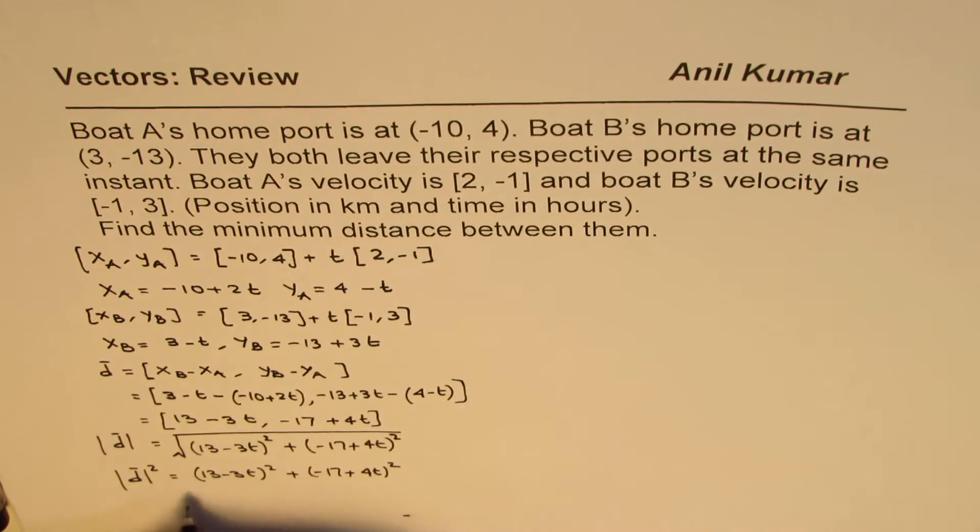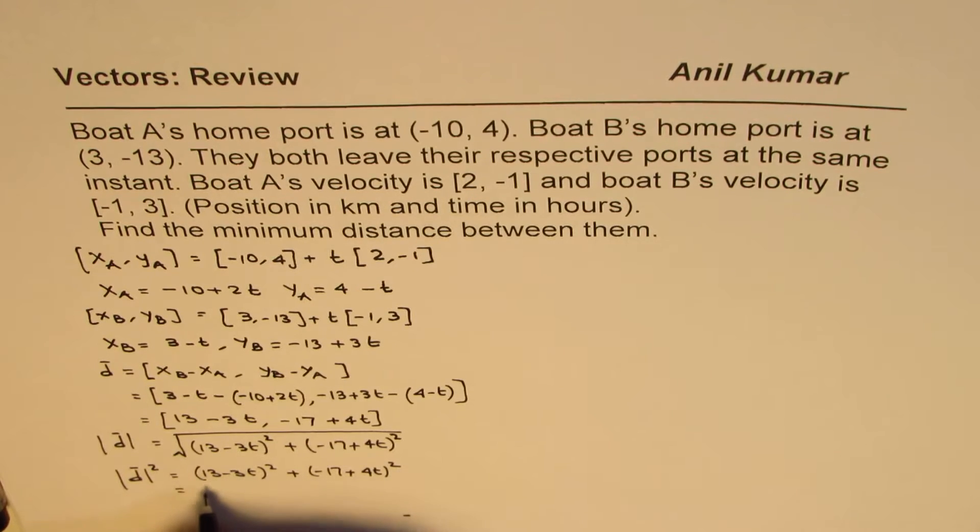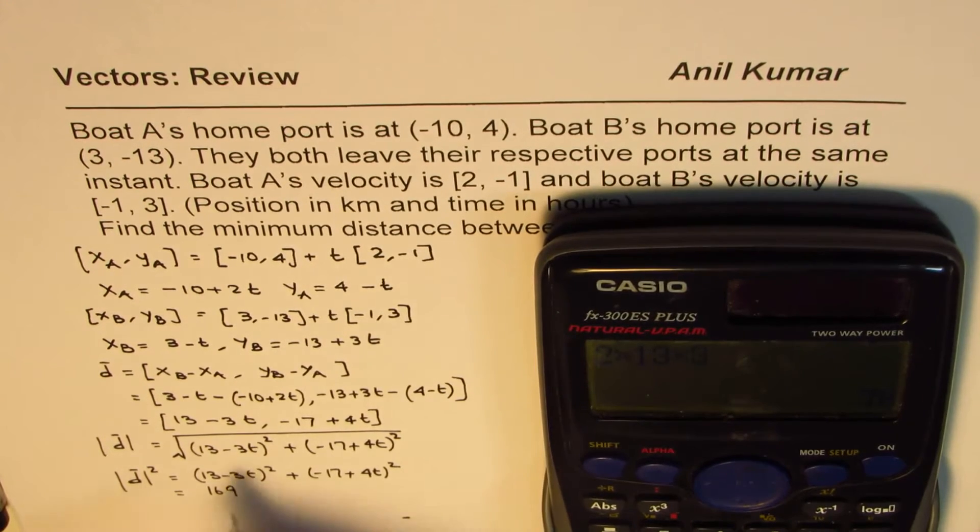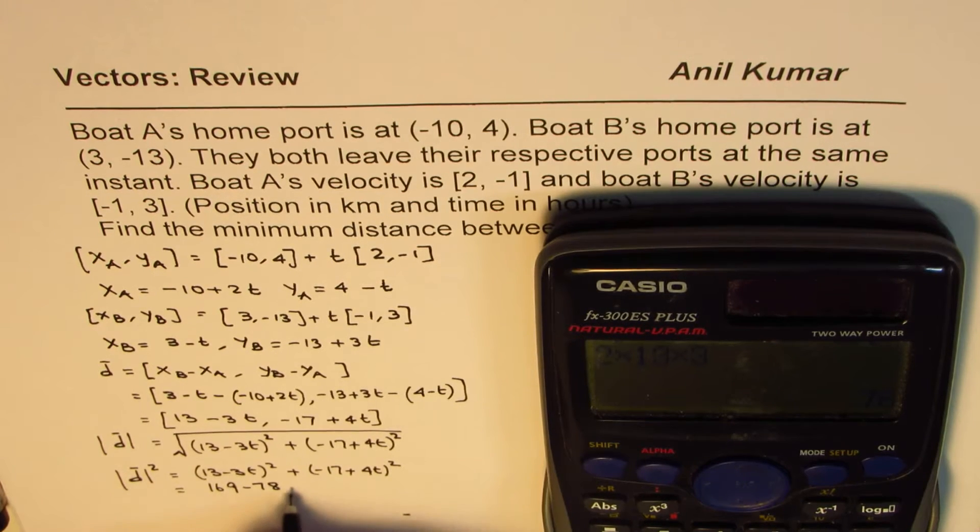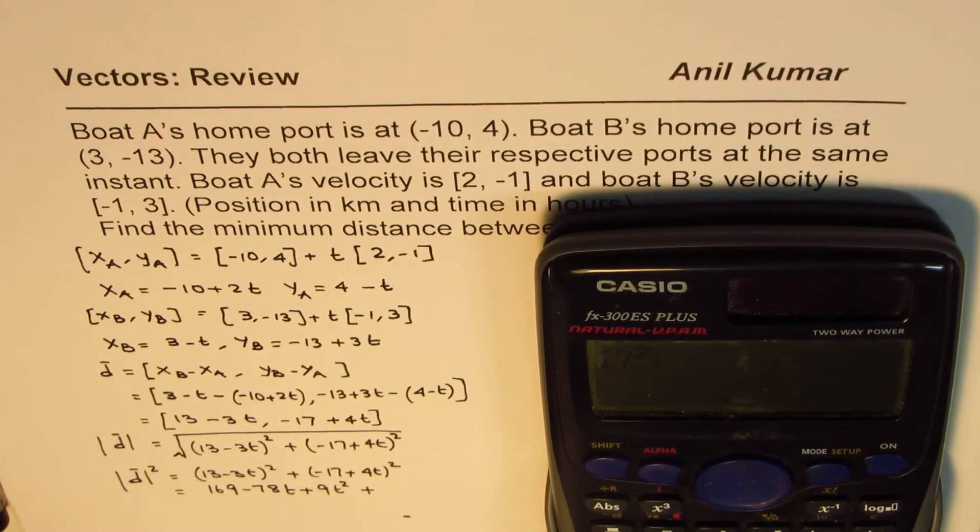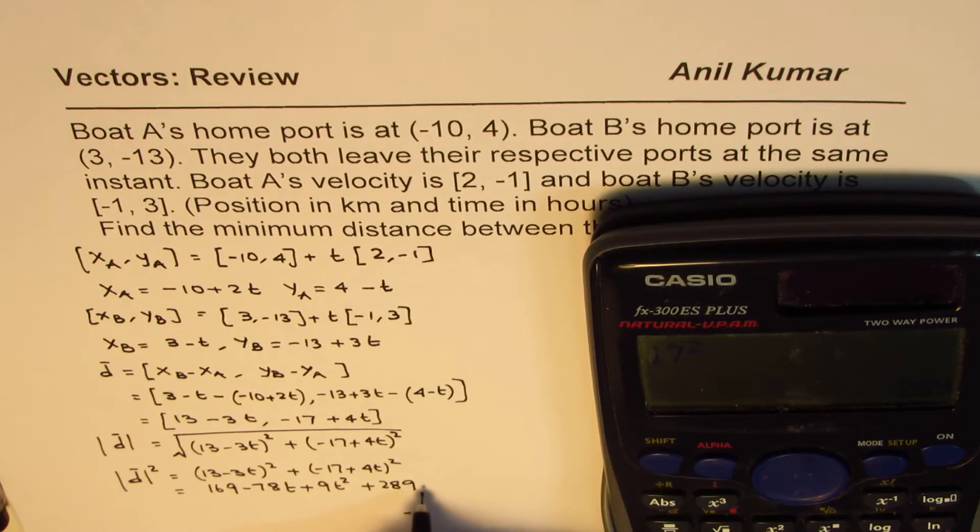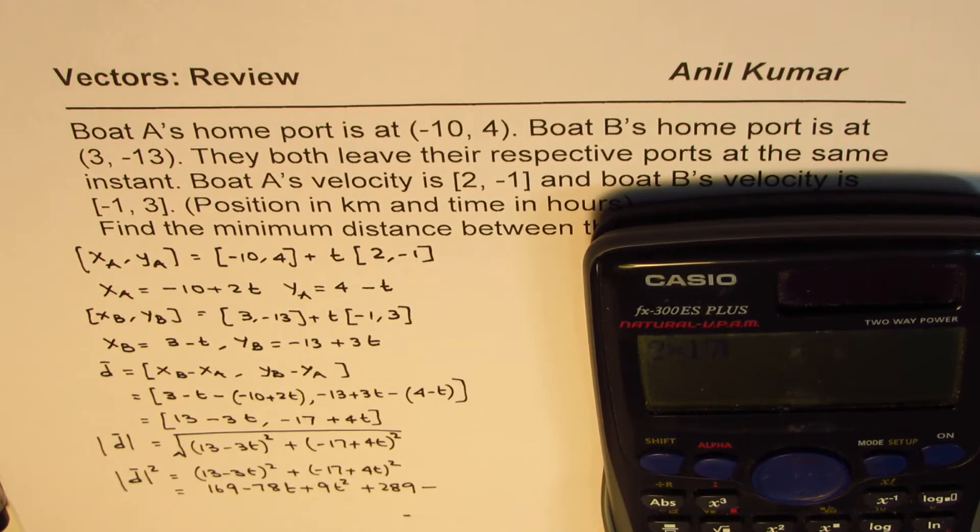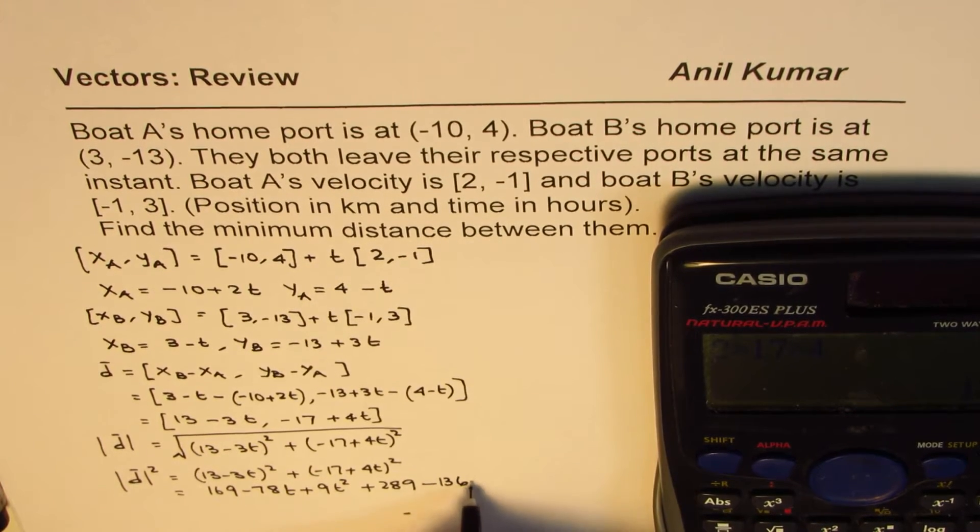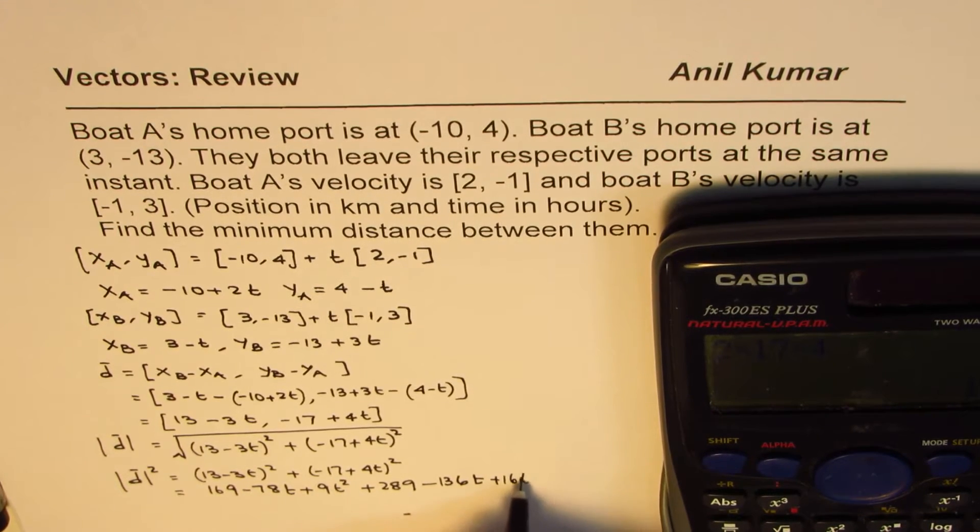Let's square this. 13² is 169 minus 2ab. So let's use calculator. We have 2 × 13 × 3, that gives us 78. So minus 78t plus 9t². And then -17². 17² is 289 minus 2 × 17 × 4, which is 136t plus 16t².